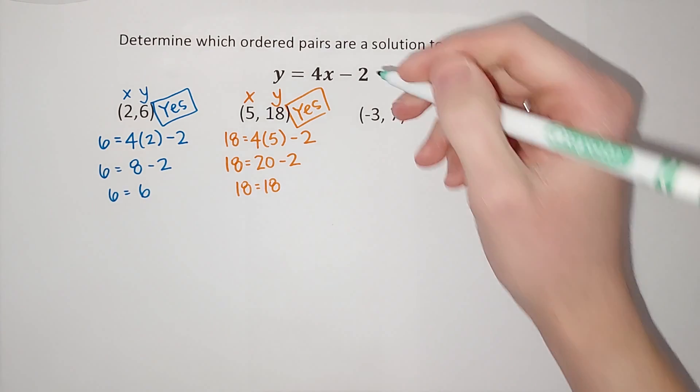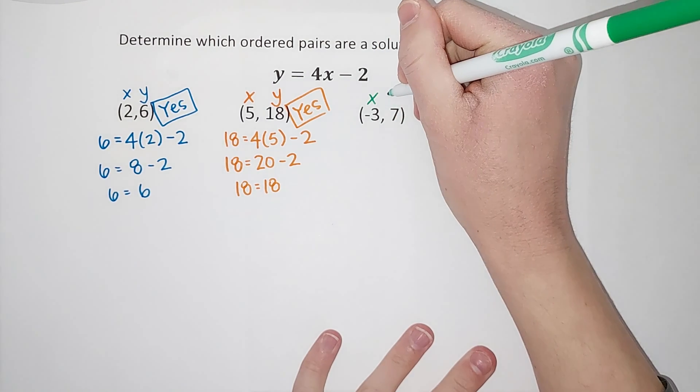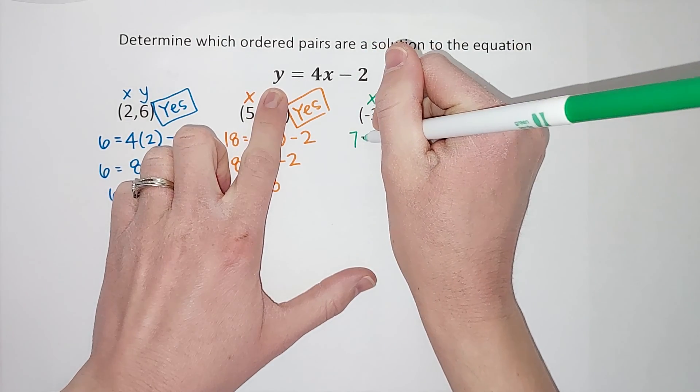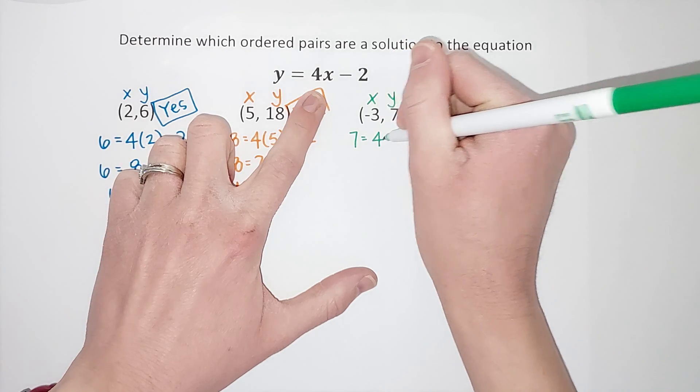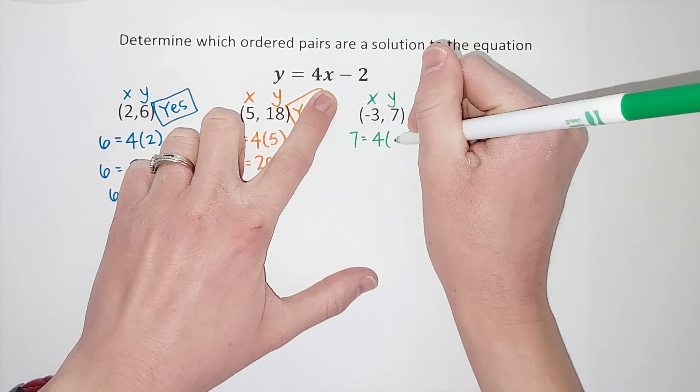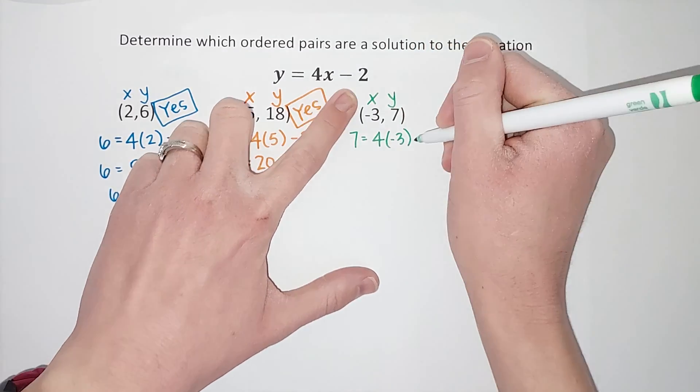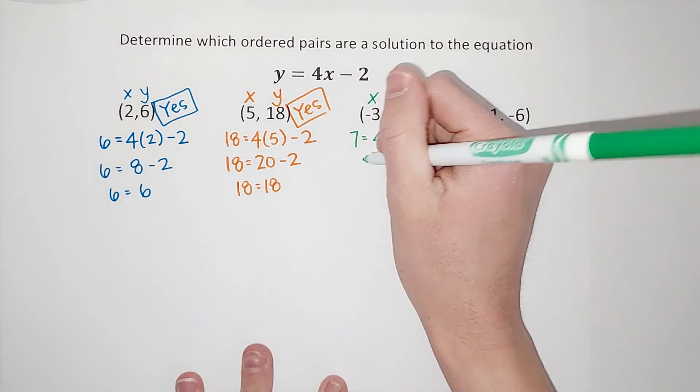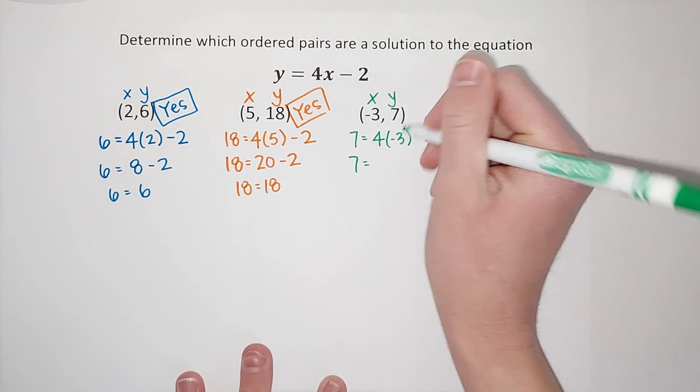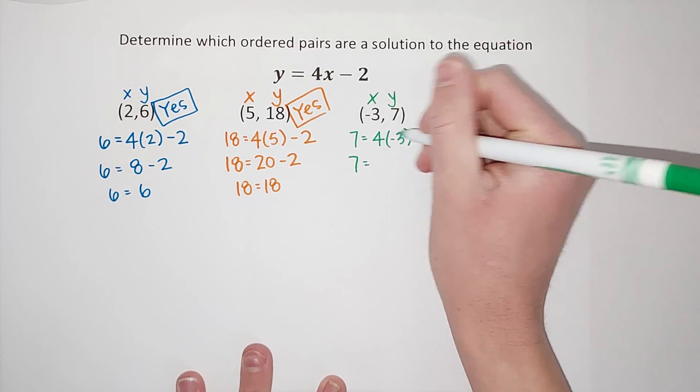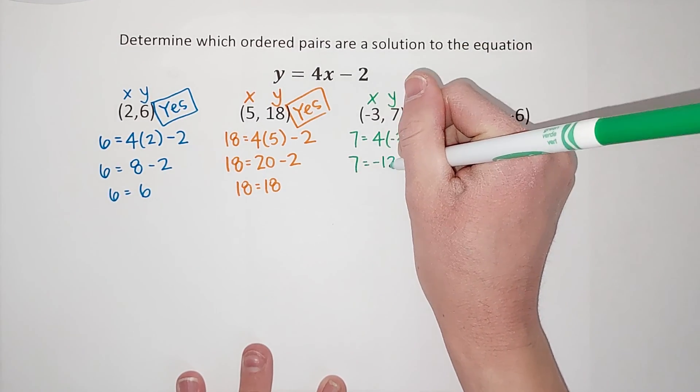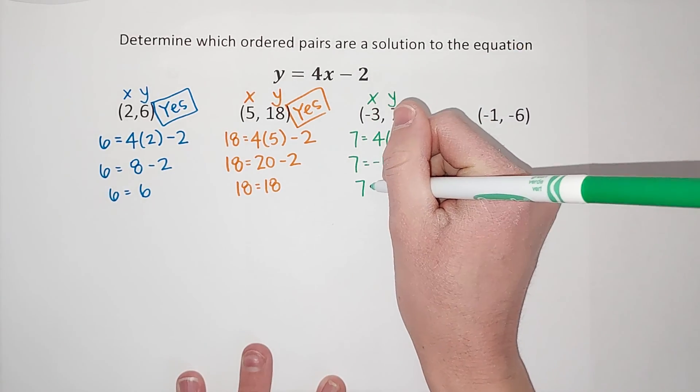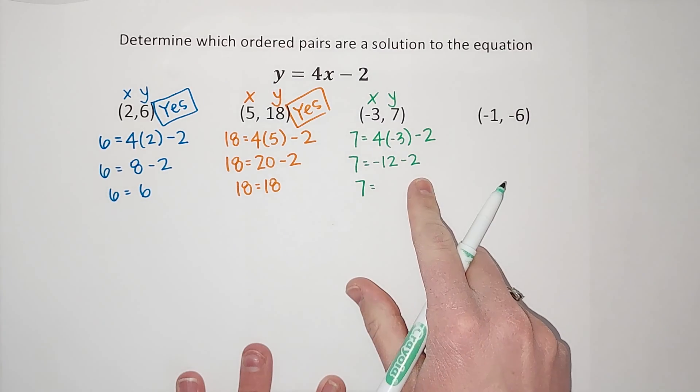Now, oh, we've got one with a negative, but we can handle it. First one is my x, second one is my y. So, y equals 7 equals 4 times x, which we are seeing if it can be negative 3, minus 2. Alright, I'm going to multiply first. So, 7 equals 4 times negative 3. Positive times a negative gives me a negative 12 minus 2. Oh, not looking good, right? We're going to end up with 7 equals negative 12 minus 2.